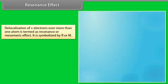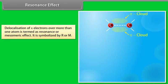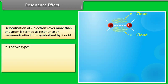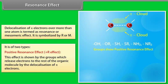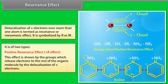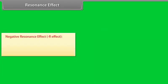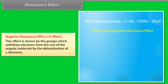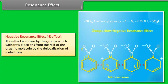Resonance effect: delocalization of pi-electrons over more than one atom is termed as the resonance or mesomeric effect, symbolized by R or M. Positive R effect is shown by groups which release electrons to the rest of the organic molecule by delocalization — for example, aniline. Negative R effect is shown by groups which withdraw electrons — for example, nitrobenzene.